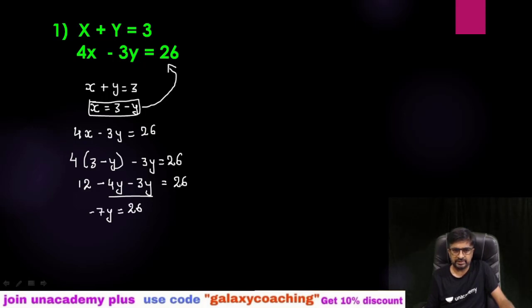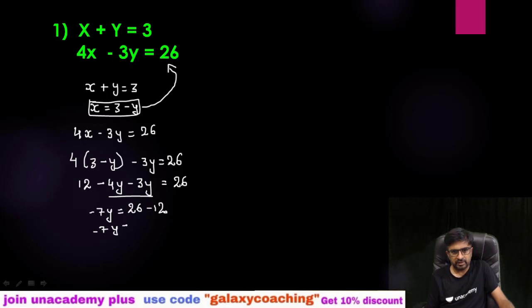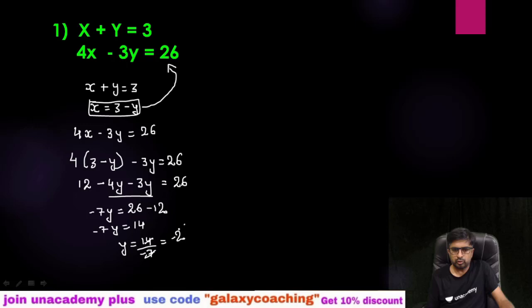So 4 times 3 is 12, minus 4y, minus 3y equals 26. Now here we have minus 7y, and 26 minus positive 12 will become negative 12 on that side, so we get minus 7y equals positive 14. Therefore y equals 14 divided by minus 7, which gives us minus 2. The value of y is minus 2.